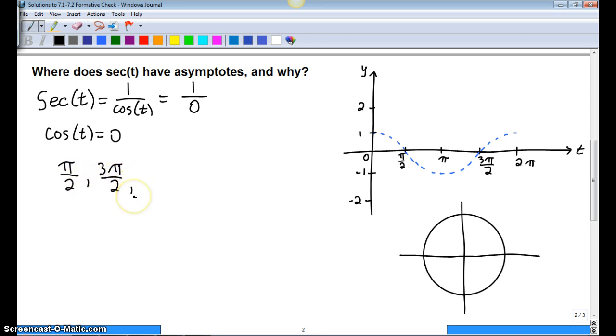Now if we keep this graph going back and forth, there's going to be another one here at 5π/2. So we can keep going, 5π/2, 7π/2.